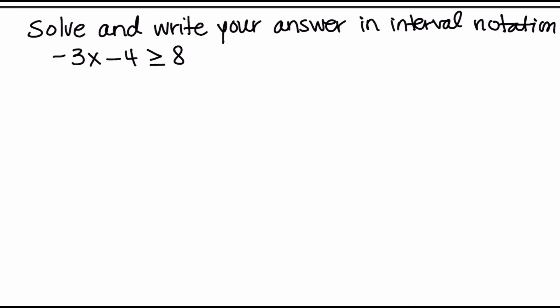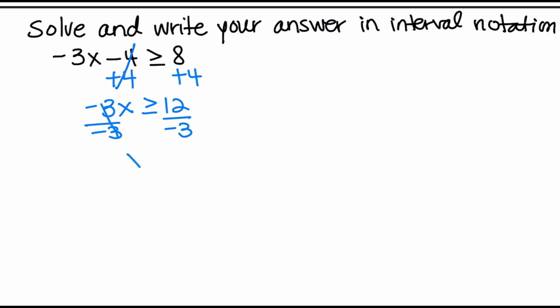Let's solve and write the answer in interval notation. The problem is: negative 3x minus 4 is greater than or equal to 8. I start by adding 4 to both sides — adding or subtracting never affects the direction of the inequality — giving negative 3x is greater than or equal to 12. Now I divide by negative 3. Because I'm dividing by a negative number, I switch the inequality, so it becomes less than or equal to, and my answer is negative 4.